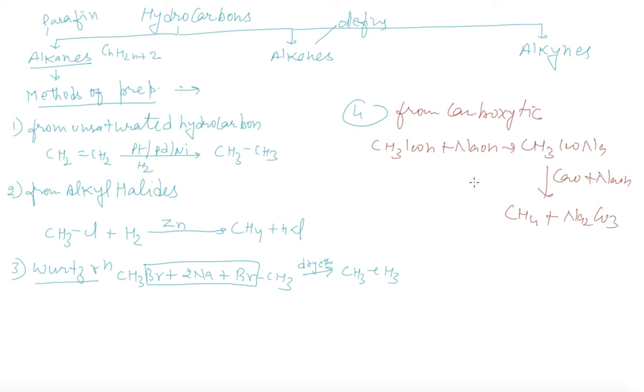Number five method is from Kolbe electrolytic method. In Kolbe electrolytic method, we will take CH3COONa plus 2H2O. Finally, we are getting ethane, C2H6, plus CO2 plus H2 plus 2NaOH.